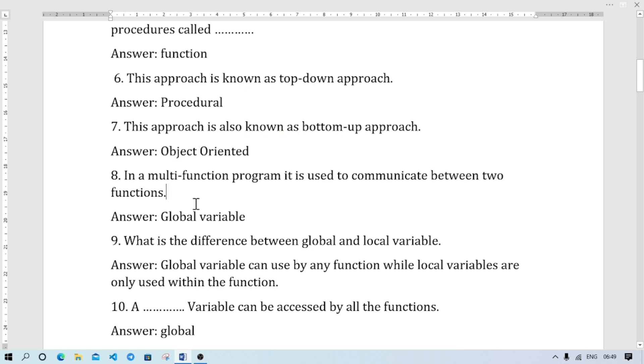In a multi-function procedure-oriented program, if multiple functions need to communicate, we use global variables to communicate between two functions. What is the difference between global and local variable? Global variable can be used by any functions, but local variables can be used only within the function where it is declared. Number 10: a variable that can be accessed by all the functions, of course it will be global variable.